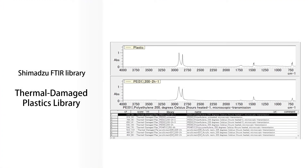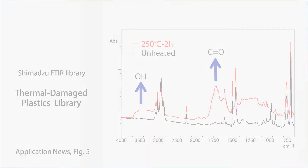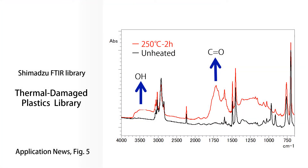To eliminate misidentification and lengthy training of operators, we present the Shimadzu-only Thermal Damaged Plastics Library. This library contains spectra data for 13 types of plastics in the unheated condition and when heated to various temperatures from 200°C to 400°C. It can be seen that the peaks of the OH group and C=O double bond appear when plastic is deteriorated by ultraviolet irradiation and heating. Let's see if we can actually detect the peaks of the hydroxy and carbonyl groups in a real sample, and if Shimadzu's library can correctly identify weathered microplastics.